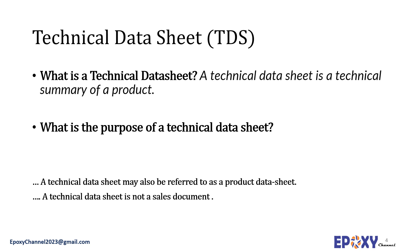Therefore, a technical data sheet is not a sales document to persuade people to try your product without giving them all the necessary information they need. In a technical document we need to be exact, accurate, concise, and avoid sales talk. A technical data sheet may also be referred to as a product data sheet.